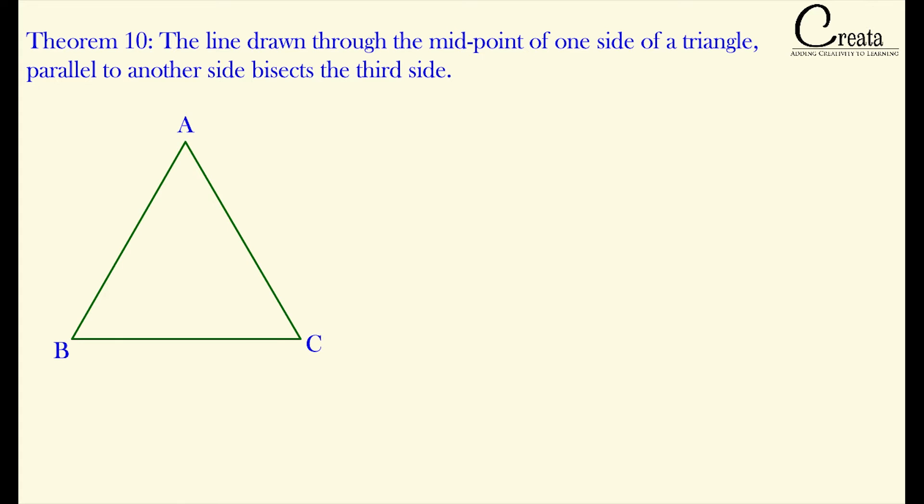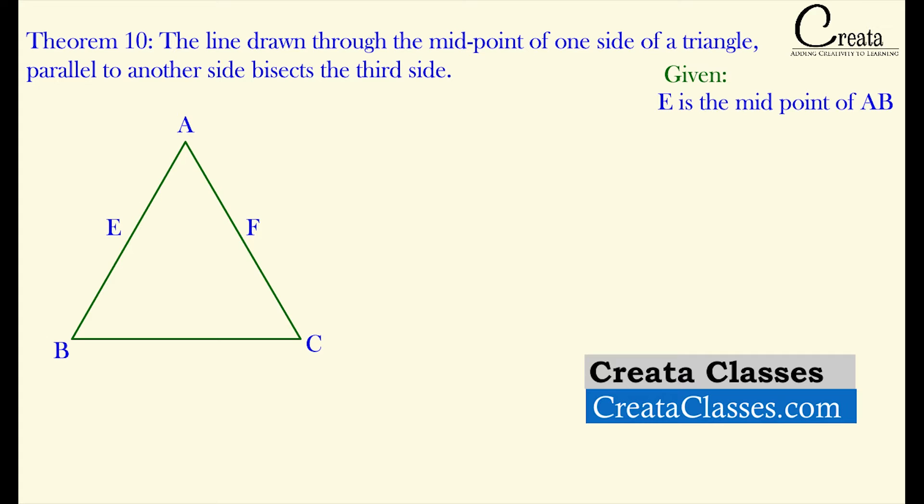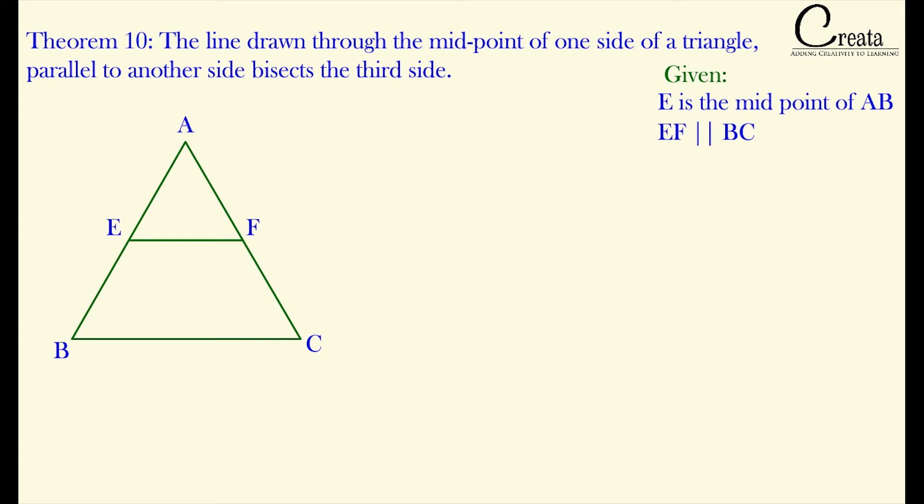Let's check the triangle ABC where E is the midpoint of AB and F is some point on AC. And EF is parallel to BC. This is the given portion. We have to prove F is the midpoint of AC.